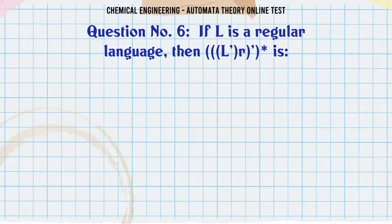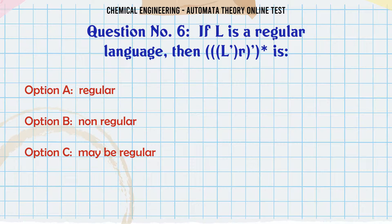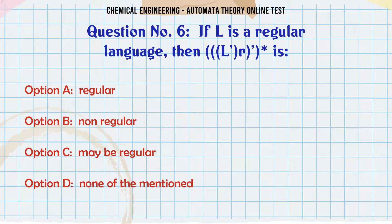If L is a regular language, then L^R is: A. Irregular, B. Non-regular, C. May be regular, D. None of the mentioned.